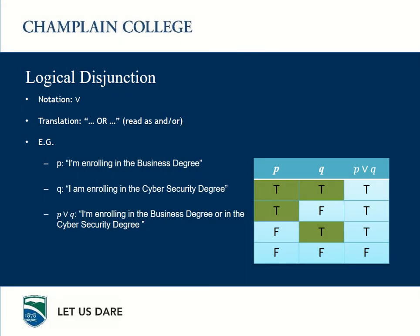Then we have the logical disjunction. The symbol looks like a V, and it's translated as OR — in the sense of 'and/or.' For instance, proposition P is 'I'm enrolling in the Business degree' and proposition Q is 'I'm enrolling in the Cybersecurity degree.' The disjunction of these two propositions will be P or Q: 'I'm enrolling in the Business degree or in the Cybersecurity degree.' On the right side of your screen you have the truth table for P or Q, which shows all possibilities. P can be TRUE or FALSE, and for each, Q can be TRUE or FALSE. The disjunction is TRUE if at least one of them is TRUE.